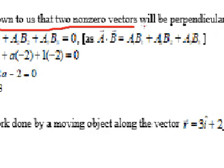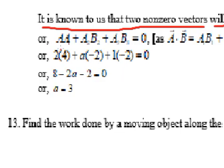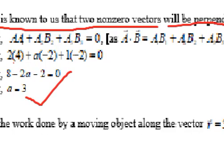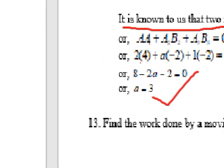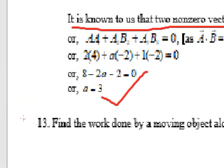Two vectors are perpendicular when their dot product equals 0. We know that a1·b1 plus a2·b2 plus a3·b3 equals 0. Therefore: a2·b2 plus a3·b3 equals 0 is the condition for perpendicularity.